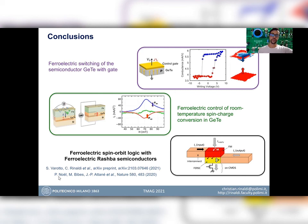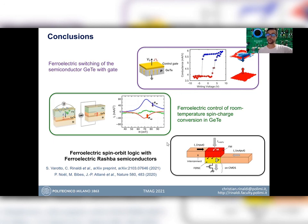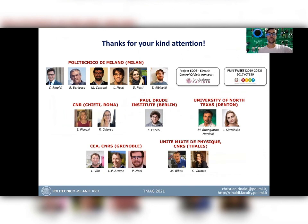Please also take a look at the very nice paper from our collaborators Paul Noël, Manuel Bibes, and Jean-Philippe Attané, published in Nature, on a different system but with the same concept: ferroelectrically controlled spin-to-charge conversion in a two-dimensional electron gas using a ferroelectric substrate, where the conversion is provided by the Edelstein-Rashba effect. I would like to thank you for your kind attention and to thank all the people involved in this work.